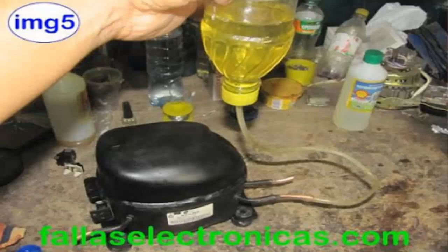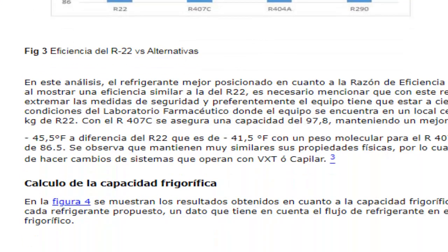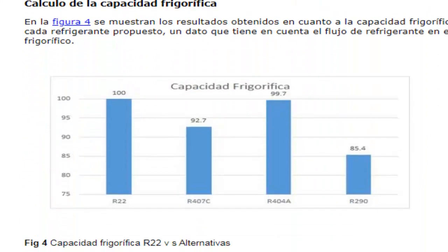Regarding performance and cooling capacity, R-22 is superior to R-407C, although the differences are small. As for performance in heating mode, both refrigerants exhibit similar characteristics. However, the performance of R-407C may be slightly inferior.